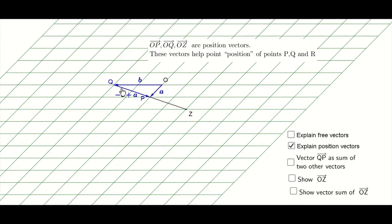So, OP, OQ, OZ, they are actually position vectors. These vectors help to point the position of P, Q, and R.